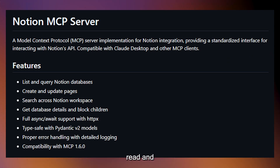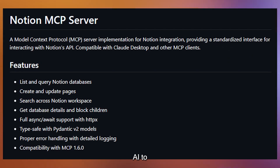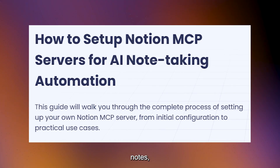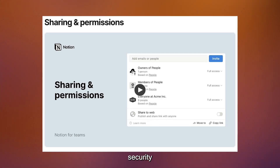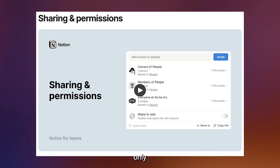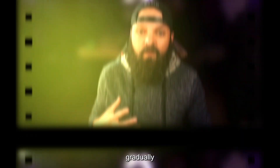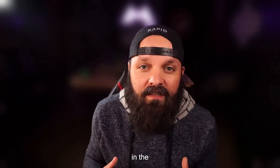Notion MCP provides read and write access to your Notion workspace, allowing AI to create pages, update databases, and retrieve information. Practical applications include automatically logging meeting notes, creating project documentation, or maintaining knowledge bases. The security consideration here is crucial — start with read-only access to understand what information the AI can access, then gradually expand permissions as you build confidence in the system.